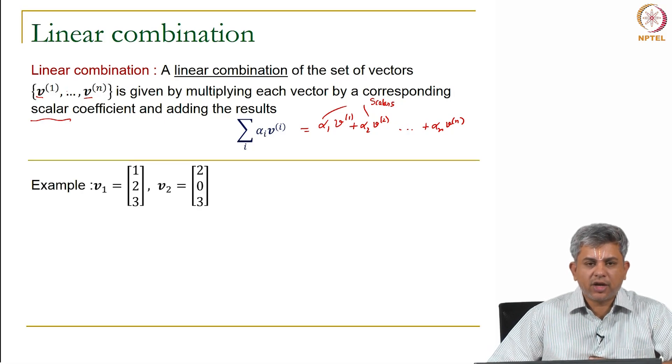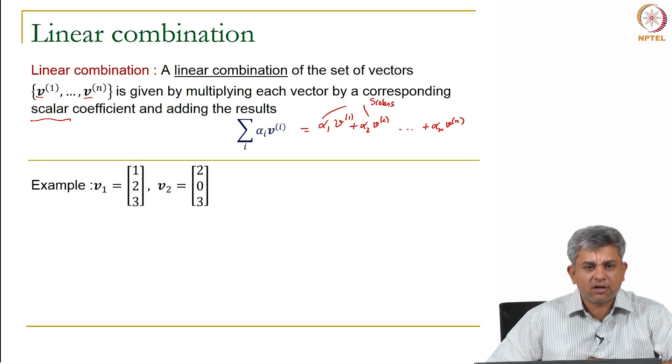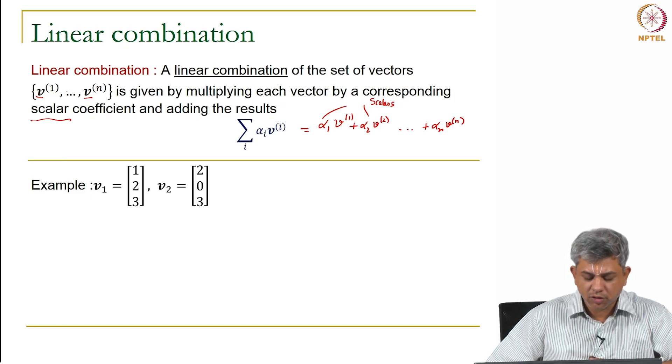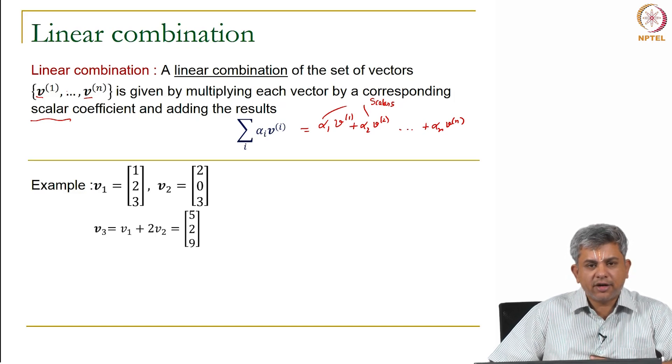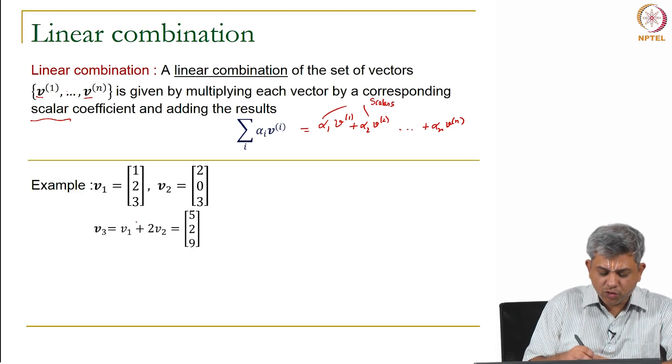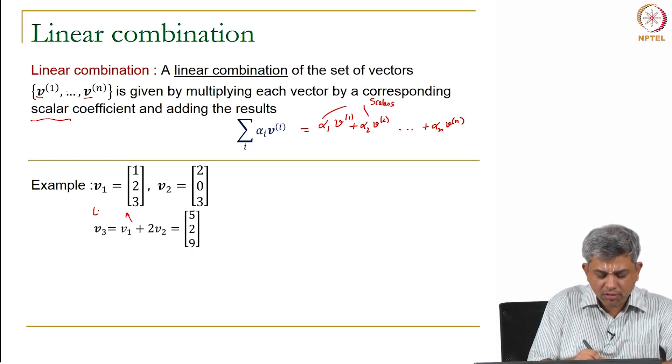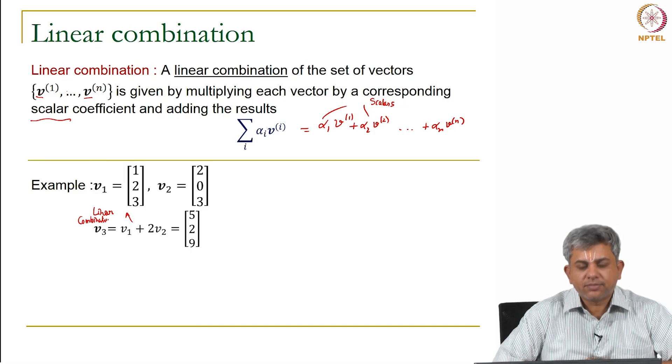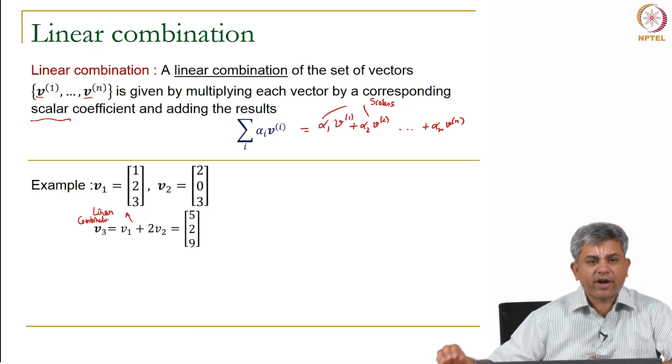Let's take a simple example. Say V1 is the vector [1, 2, 3], V2 is the vector [2, 0, 3], and V1 + 2V2 is a linear combination. In this case, we get [5, 2, 9].